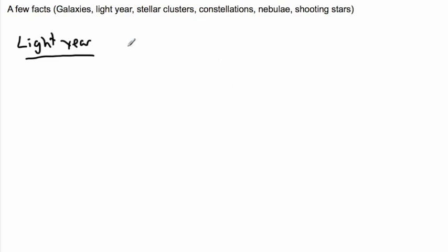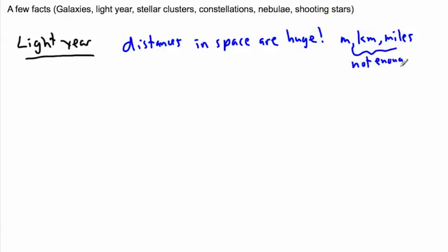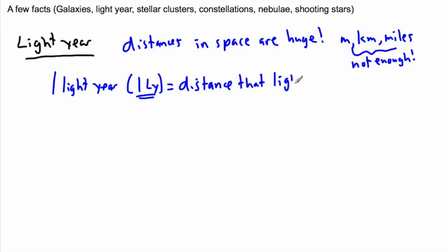We're going to start with what's a light year. I think that's maybe a good first place to start. Now the thing is that distances in space are huge. So for example, just meters or kilometers or miles or things like that, they're not enough. We need really far distances. So one light year, we'll say like it's one light year, is otherwise known as 1LY for short.